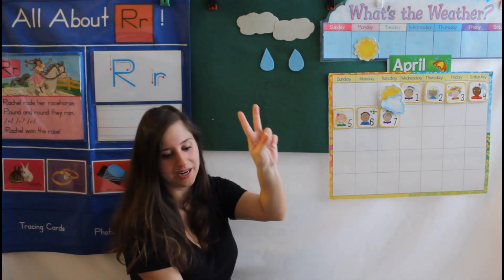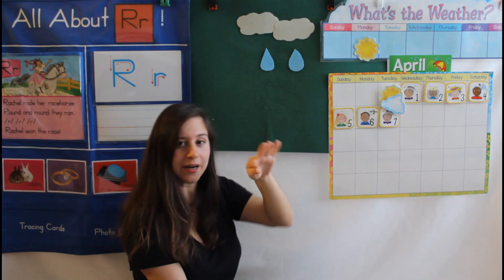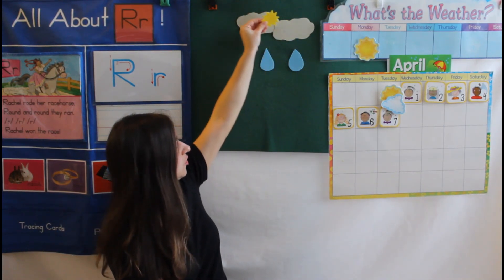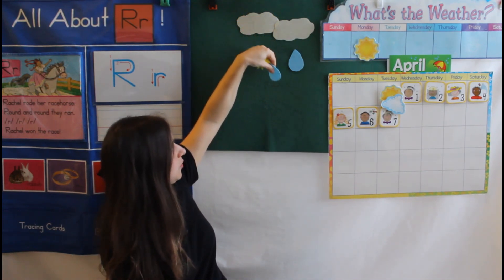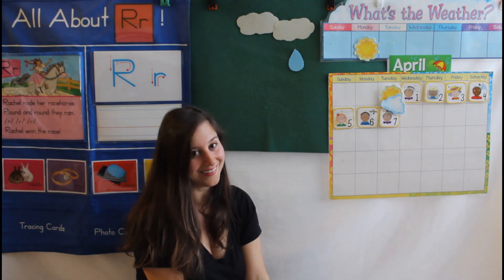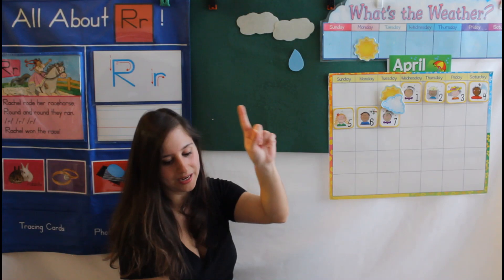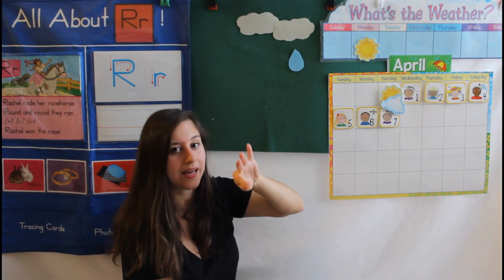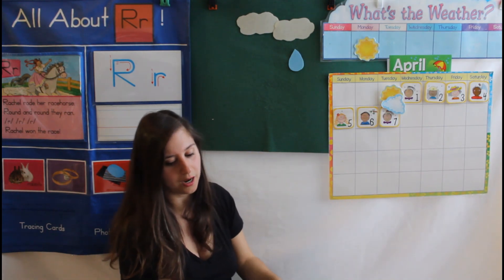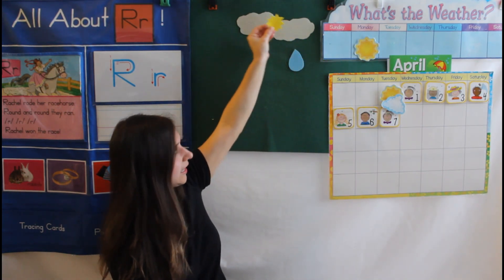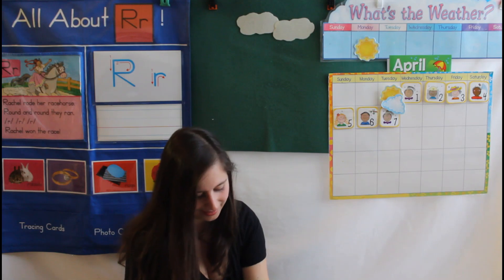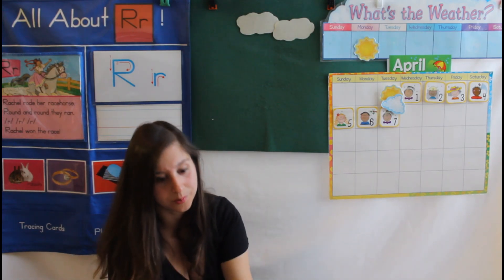Two little raindrops dancing on the walk. Pitter patter, pitter patter, that's the way they talk. Out comes the yellow sun, shining in the sky. And away goes one raindrop — bye bye. Oh, how many are left now? Just one. One little raindrop dancing on the walk. Pitter patter, pitter patter, that's the way they talk. Out comes the yellow sun, shining in the sky. And away goes one raindrop — bye bye.